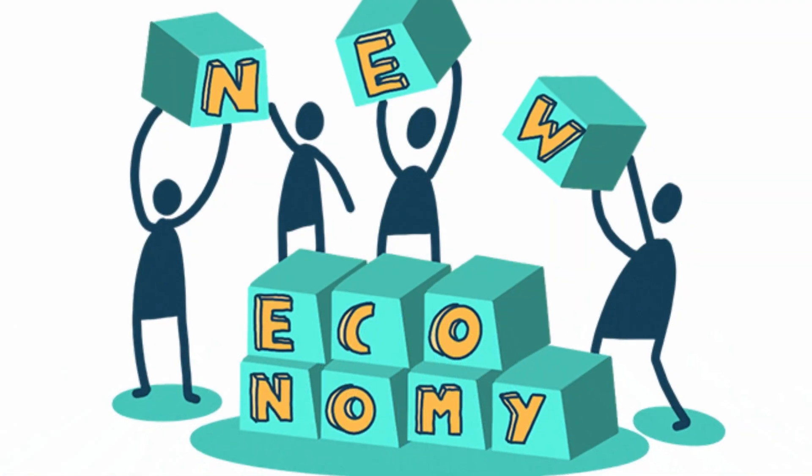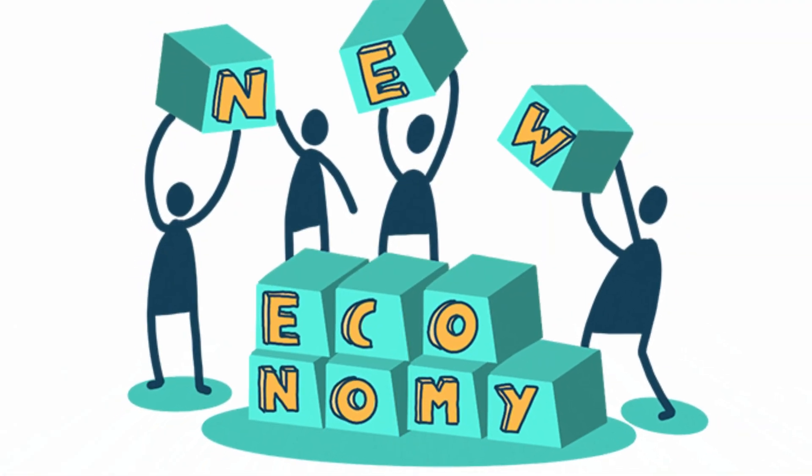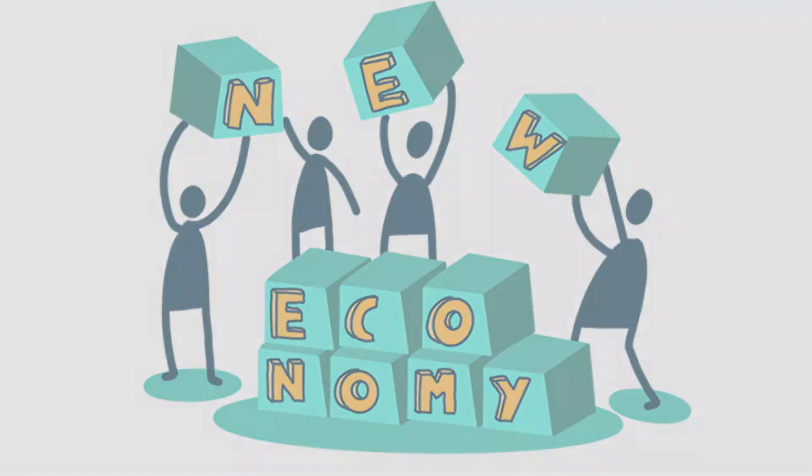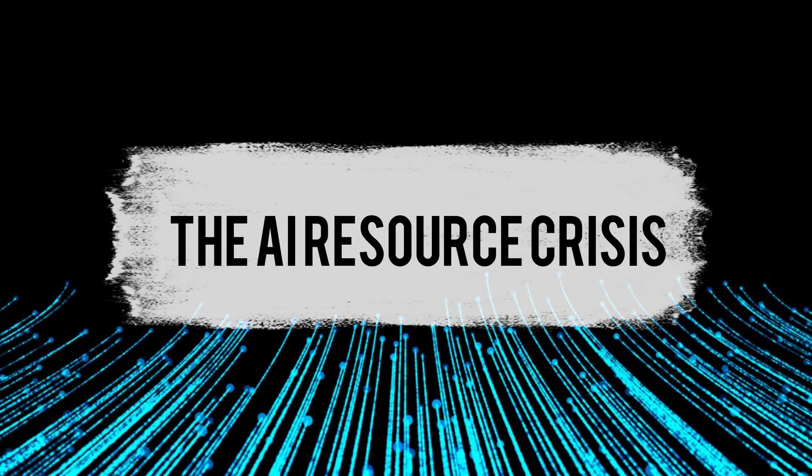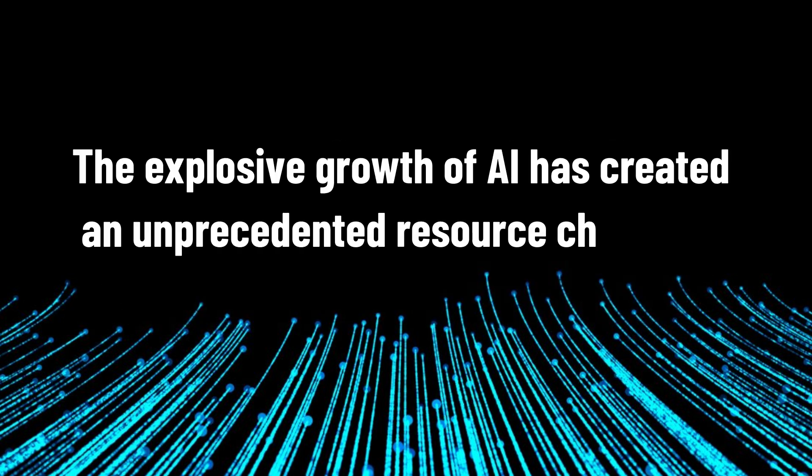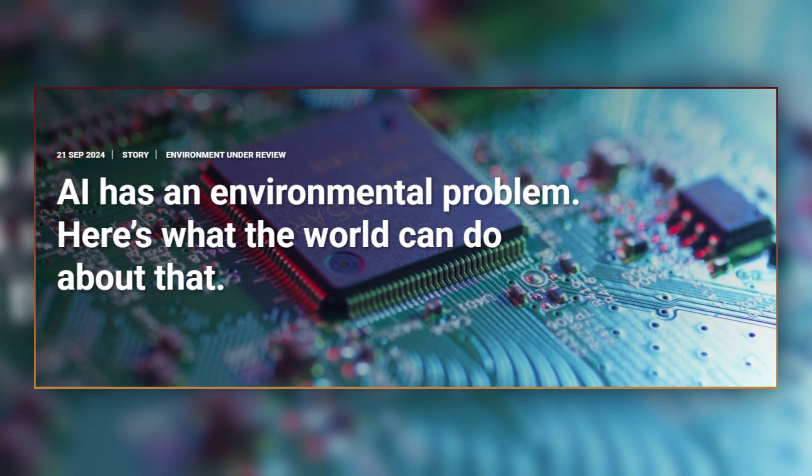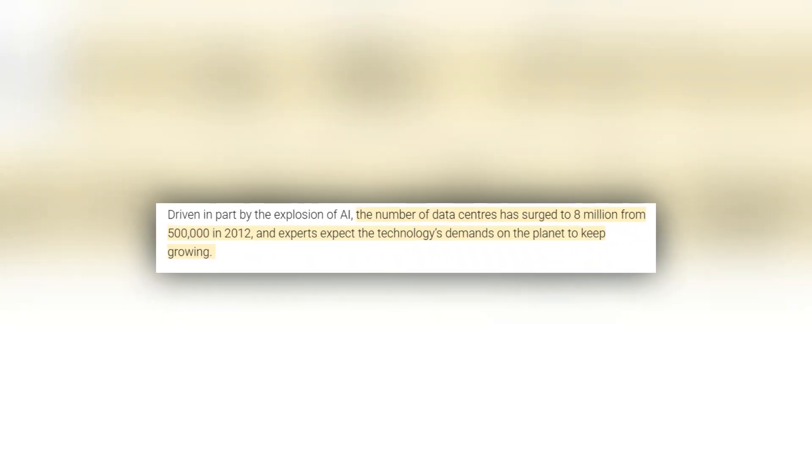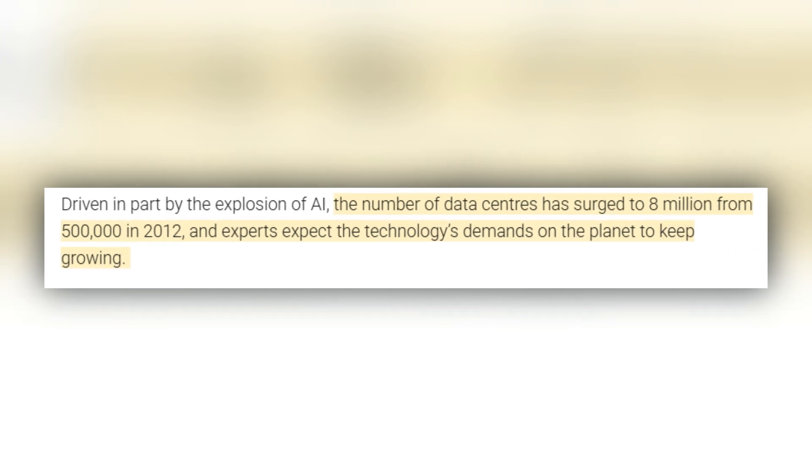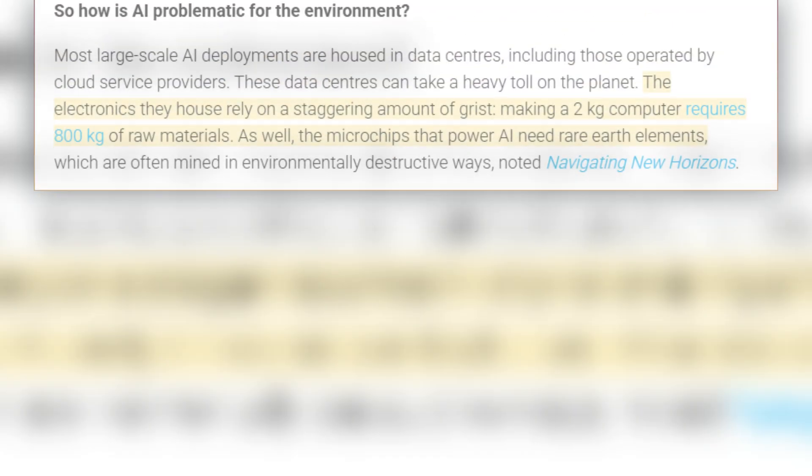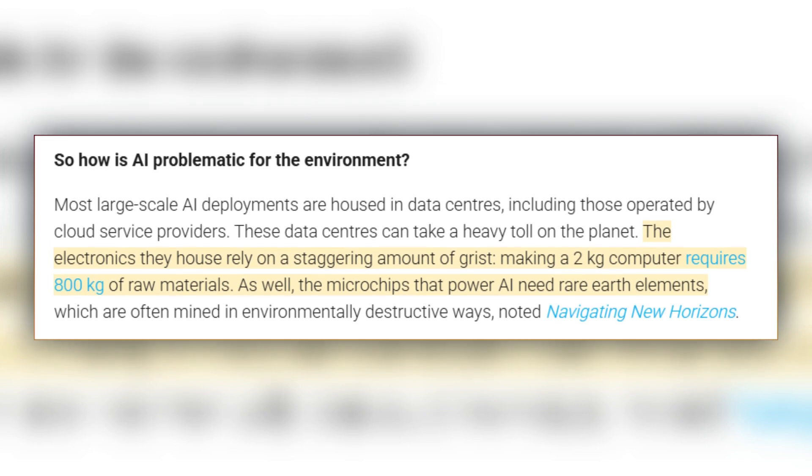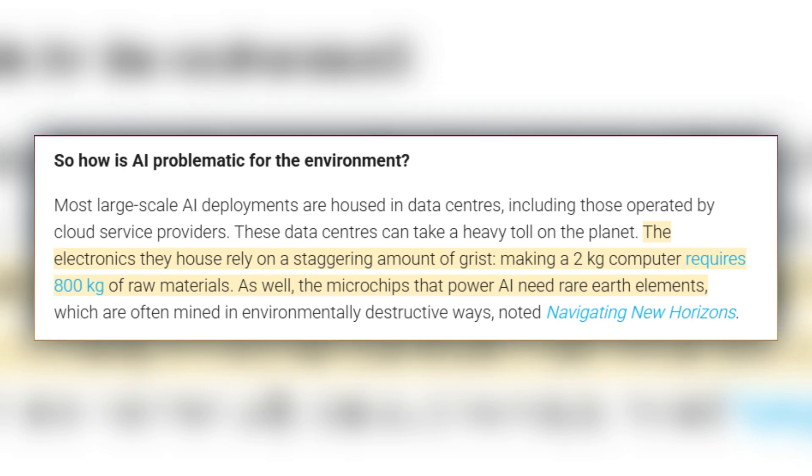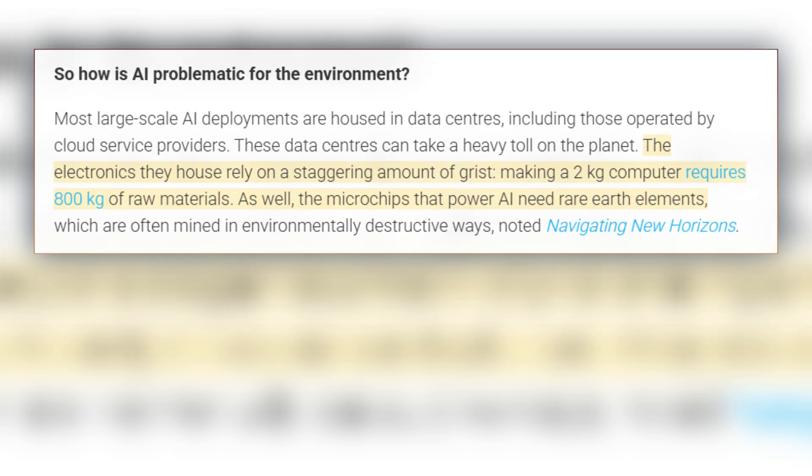However, this economic shift is just one part of a larger transformation that's already beginning. Prediction number three: the AI resource crisis. The explosive growth of AI has created an unprecedented resource challenge. Since 2012, the number of AI data centers has skyrocketed from 500,000 to 8 million globally. Each center's impact is massive. Manufacturing just one kilogram AI computer chip requires 800 kilograms of raw materials and rare earth elements.